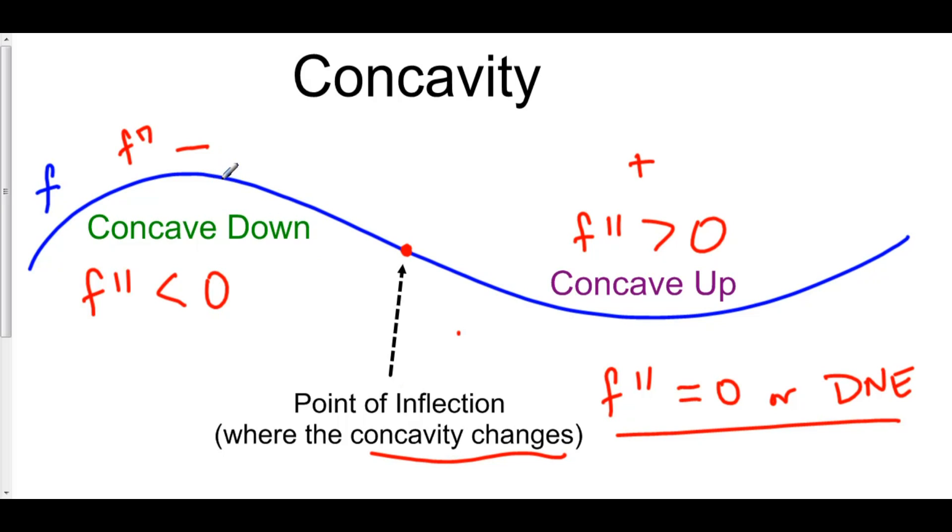So if the second derivative changes from negative to positive, our function is concave down to concave up. But if our function changes from second derivative being positive to negative, then here we have our function being concave up to concave down.